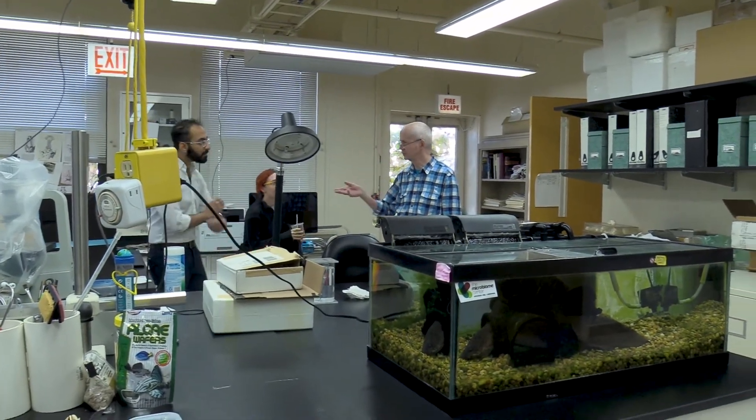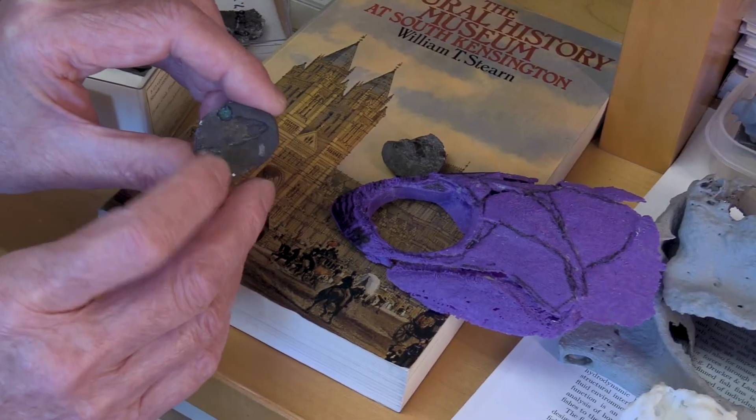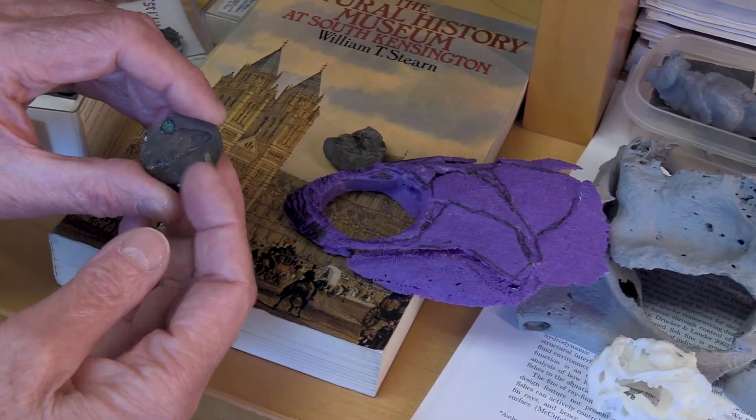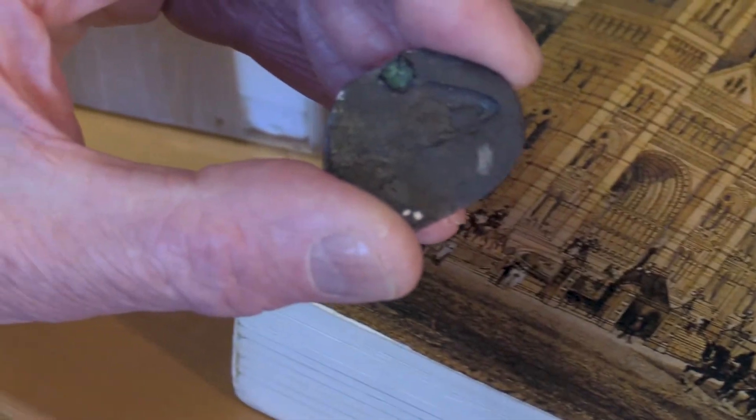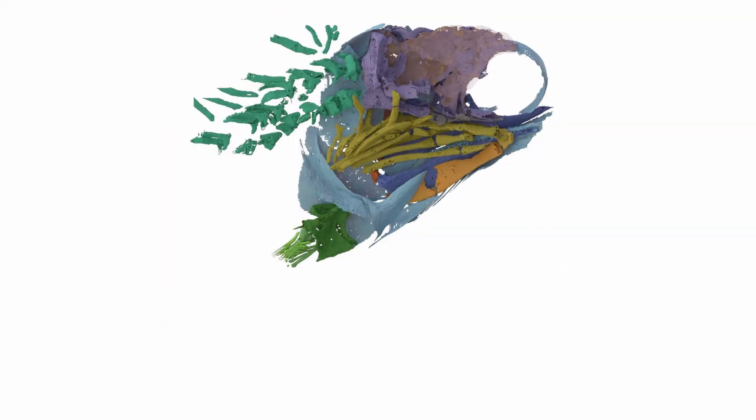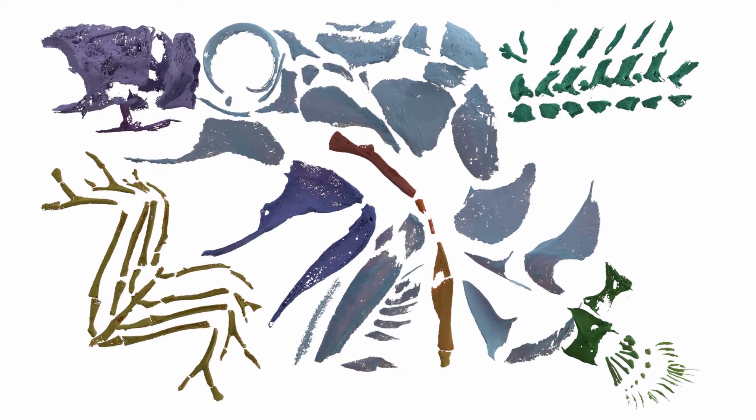We keep going back and finding traces of new things in it. This specimen was described in a very rudimentary way back around 1890, and I published a paper on it in the late 1990s. When we looked at the part and counterpart, one had a beautiful natural mold of the outside of the fish's head, and on the other side there appeared to be something like the fish's brain preserved, along with the palate and the eyeball — beautiful moldings of the interior of the fish's head. This is really unusual preservation.